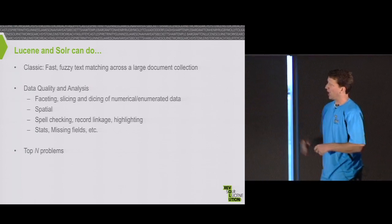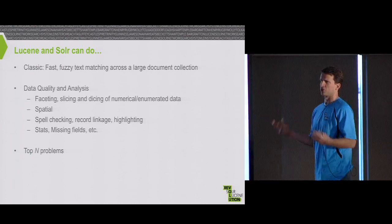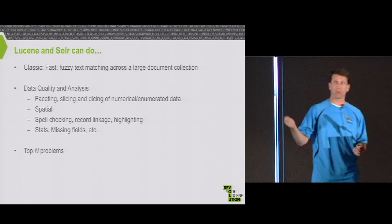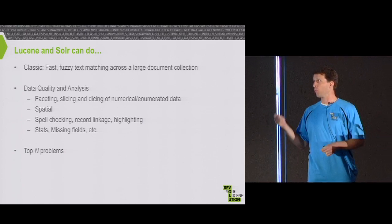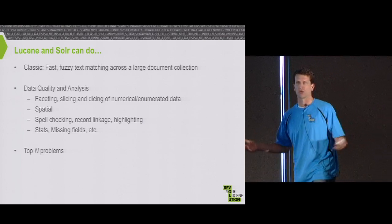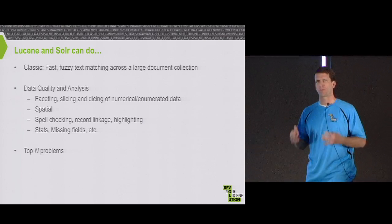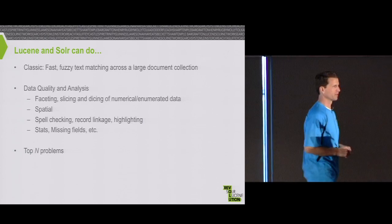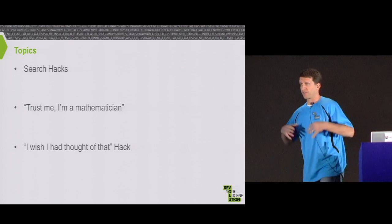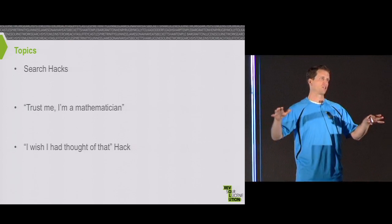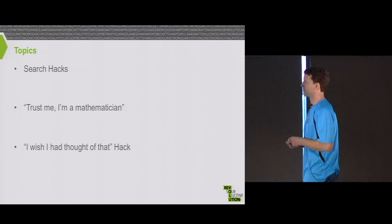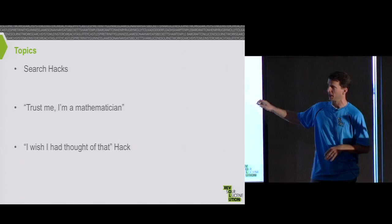We're really good at this notion of ranking, what I like to call top N problems, N being some value there. N can be one - what do we call a top one problem these days? It's a key value store. What do you call top 10? That's search. So there's a lot of different problems that can be modeled as top N problems. I'm going to break the rest of this talk down into three main areas: First, just some classic search things; Second, trust me I'm a mathematician; And then last, I wish I had thought of that.